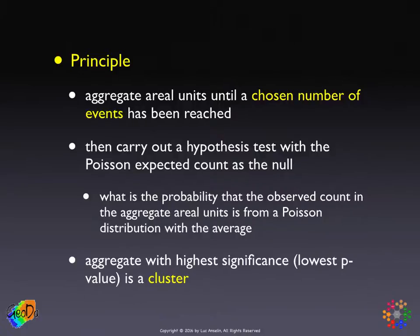Given your counts, you find out what is the probability that you have this number of counts if your events follow the equal risk hypothesis. If you have many more counts, that probability will be very small, and that is when you call it a cluster. This is an area where you have reached the critical number of events, but within that area, given its population, there are many more events than you would expect under the null hypothesis of equal risk.